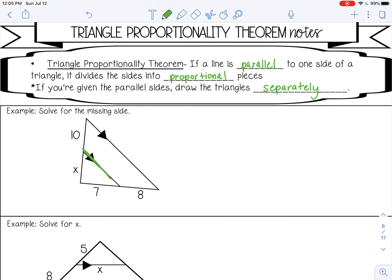In the first example, we aren't given the lengths of the parallel sides, so we don't necessarily have to draw the triangles separately. We can just match the proportional pieces, and there's a few ways that you can set up the proportion and get the same answer. I can match X with 7, so X over 7, and then 10 over 8. So the pieces are proportional. Another way I can set it up is X over 10. You just want to match the second ratio to the first ratio.